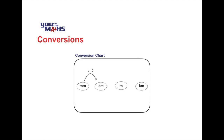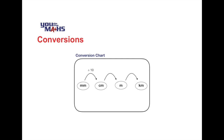Let's also look at the conversions between centimetres and metres, and then on to kilometres. We know that in one metre there are 100 centimetres, so to convert 100 centimetres to a metre we divide by 100. Likewise, there are 1000 metres in a kilometre, so we divide by 1000 to get the number of kilometres from metres.